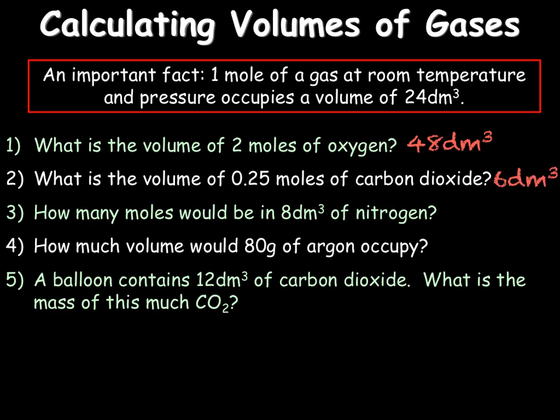For the next question we need to do this in reverse. So we know that 1 mole of nitrogen would occupy 24 dm cubed but we do not have 24 dm cubed, we only have 8 dm cubed. So we need to do our 8 divided by our 24 which gives us 0.3 recurring moles.